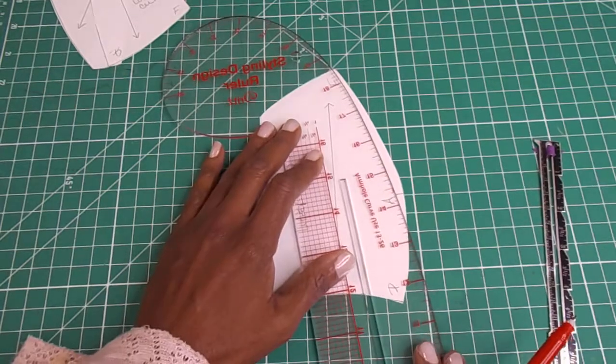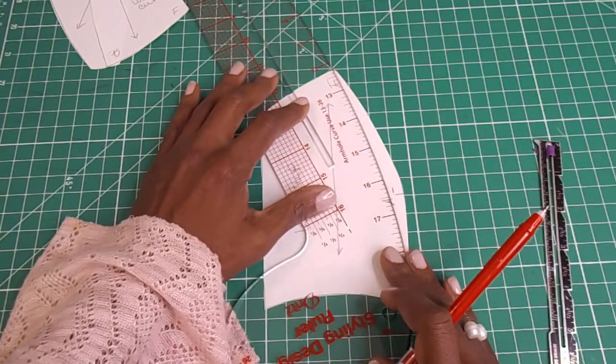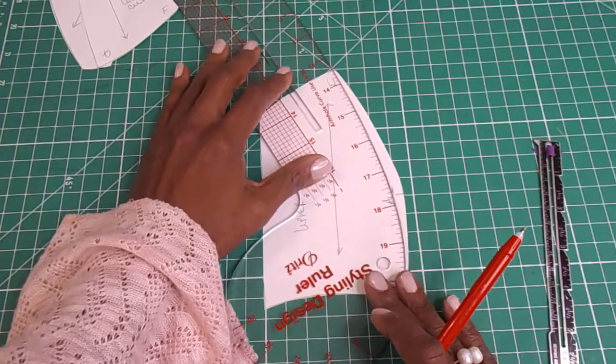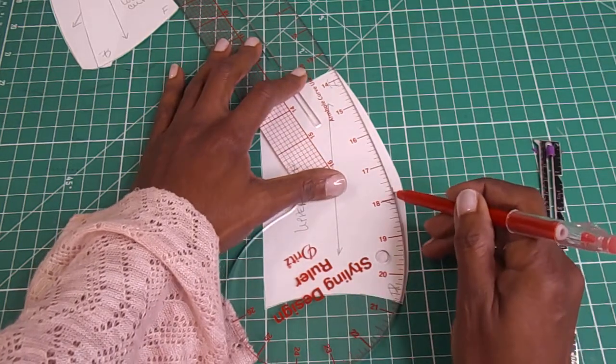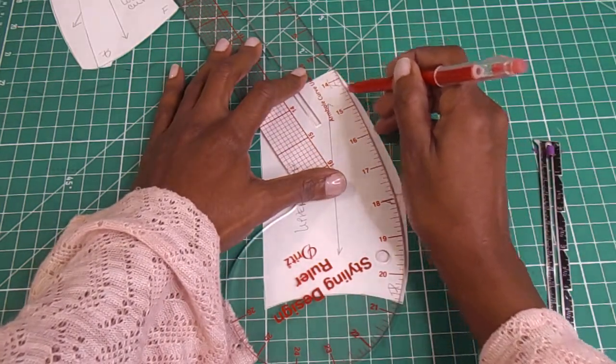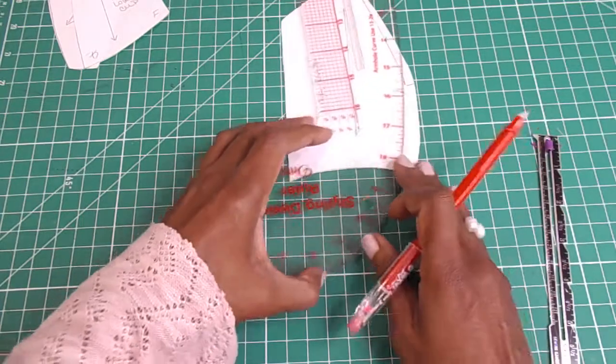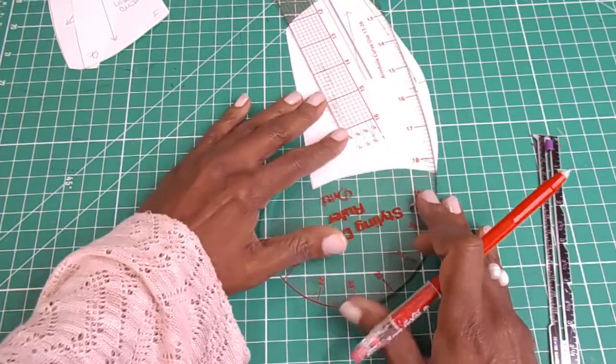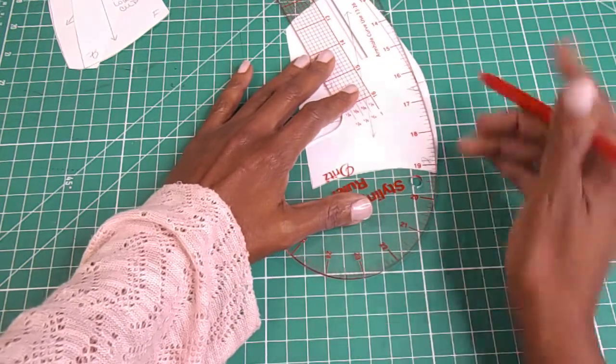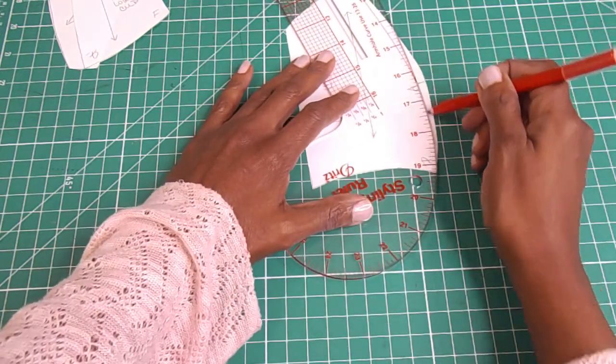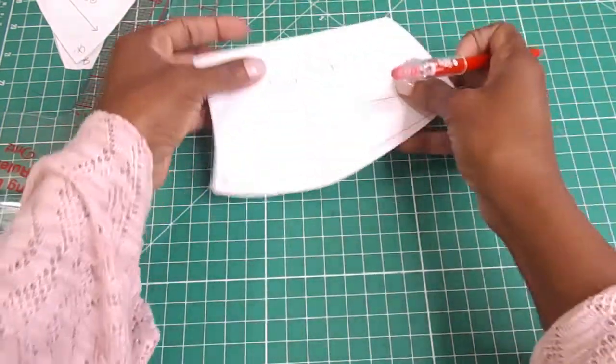And make it as natural of a curve as possible. Just following your original line here from that point. And then we'll do the same thing to the other side to this known point. There you go. So here's the line.